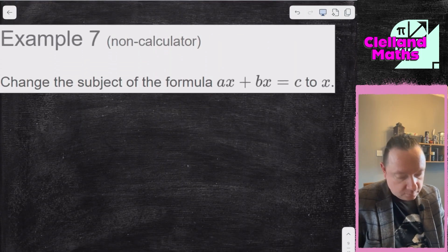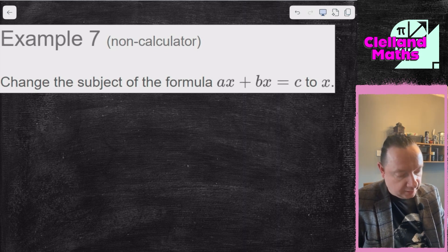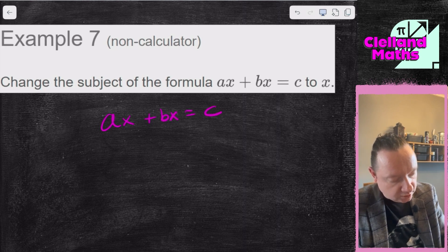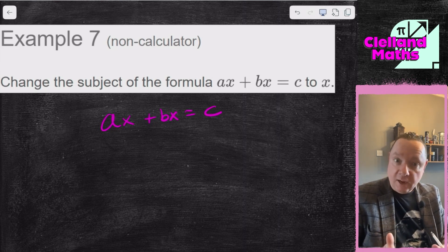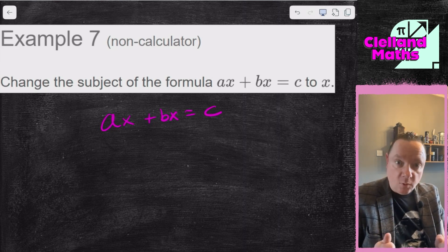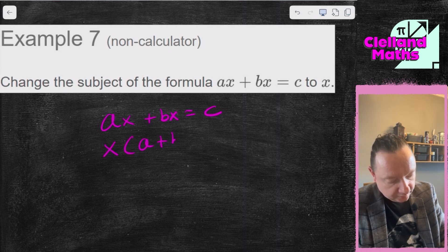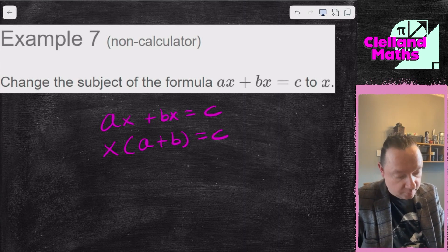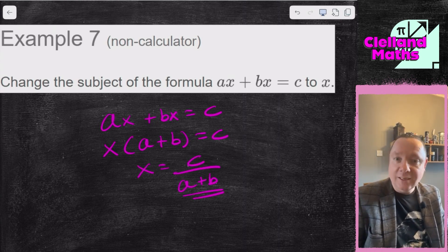Example 7: change the subject of the formula ax + bx = c to x. We've got two x's, so moving things around won't work — I only want one x. So I can factorise. When that happens, when there's more than one of the variable you want, factorise. x is a common factor, giving x(a + b) = c. Now I can divide by everything next to x, which is (a + b), so x equals c over (a + b). And we're done — nice and simple.